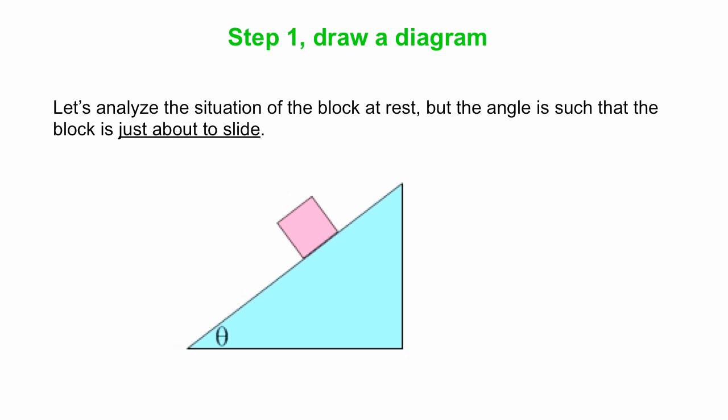So first, we've got a box on a ramp, and the angle of the ramp is such that the block is just about to slide. If we went one little bit further up an angle, the box would slide. So we know the box is at rest, but we're using the maximum possible force of static friction here.